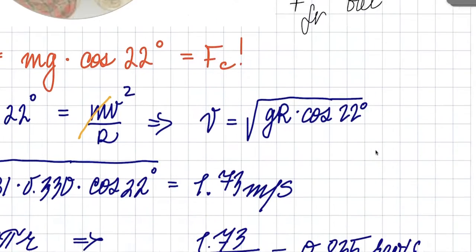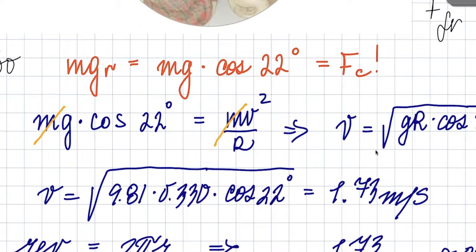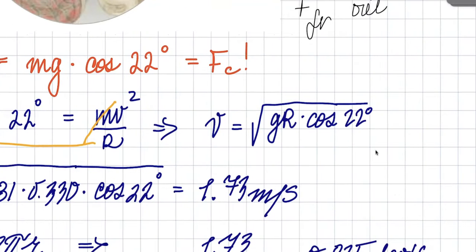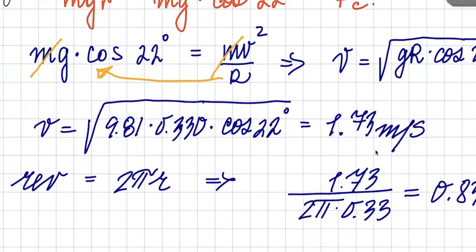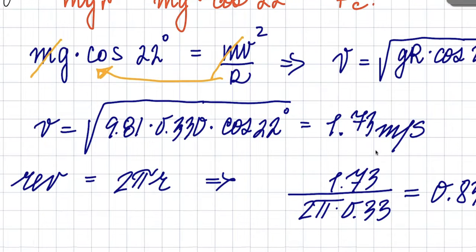So when I rearrange it, G cosine of 22 multiplied by R, R goes over here, and then you root. So G R cosine of 22, when you plug it in, 9.81 times 0.33 cosine of 22 gives you 1.73 meters per second.